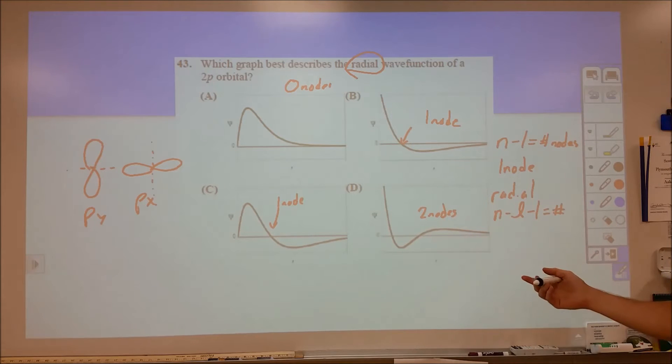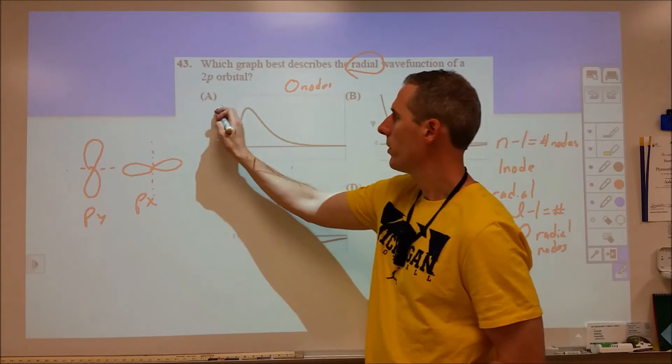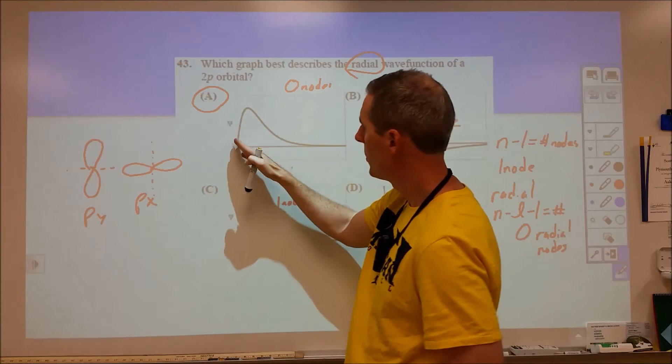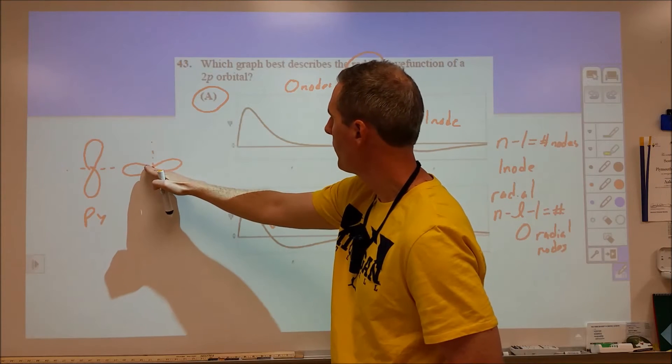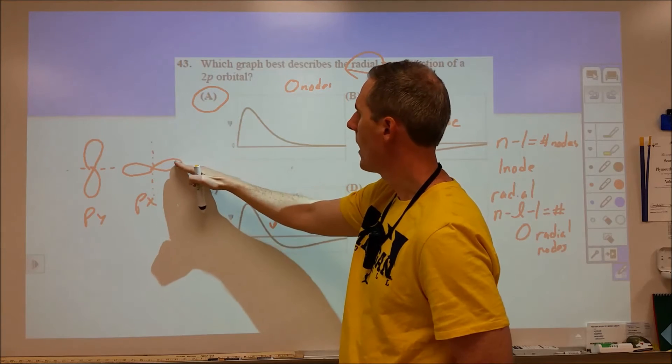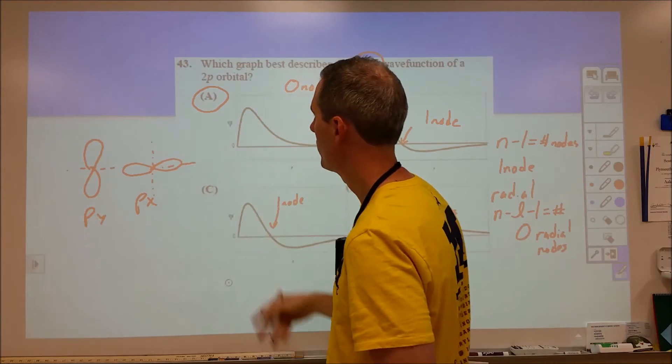The radial nodes are given by N minus L minus one. That's the number of radial nodes. So 2 minus, for a p orbital L is 1, minus 1, we have zero radial nodes. So at that point, A is our answer. We don't have any other choices. But this also makes sense. As we move away from here, we start at zero electron density. As we move away, we start to get a lot, and then we slim back down. If we look at this as a cross section radially as we move out, we increase in electron density, and then we decrease back down.